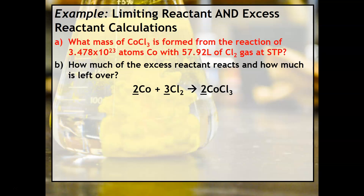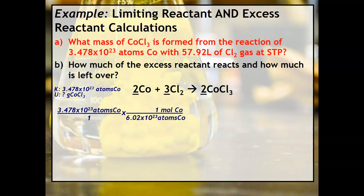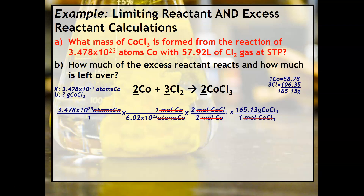To take care of the first part, we'll start with our known and unknown as usual. We have atoms, which is a clear sign we're going to have to use 6.02 × 10²³. We'll put 6.02 × 10²³ on the bottom and 1 mole on top. Next is the mole ratio step — the ratio is between cobalt and cobalt-3 chloride. Then because the question asks for mass of cobalt-3 chloride, we'll use the molar mass. According to this calculation, 95.40 grams of cobalt-3 chloride is produced.